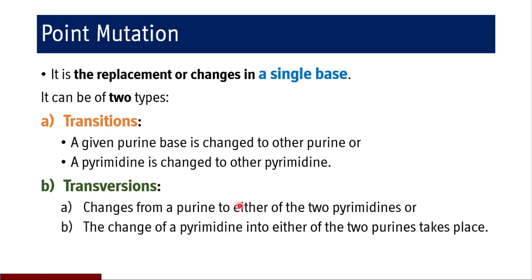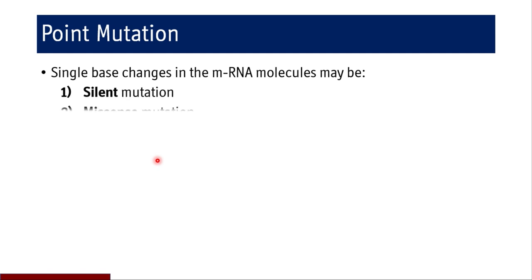In transversions, the nucleotide changes from a purine to either of the two pyrimidines, or if a pyrimidine is present in the original sequence, the mutated sequence may have either of the two purines. For example, if adenine was in the original sequence, it may change into cytosine or thymine. If cytosine was present, it will change to adenine or guanine. These are transversions. Single base changes in mRNA may produce a silent mutation, missense mutation, or nonsense mutation.